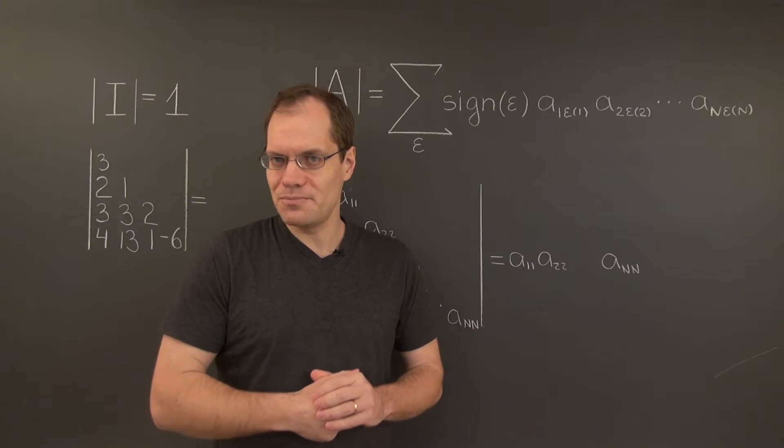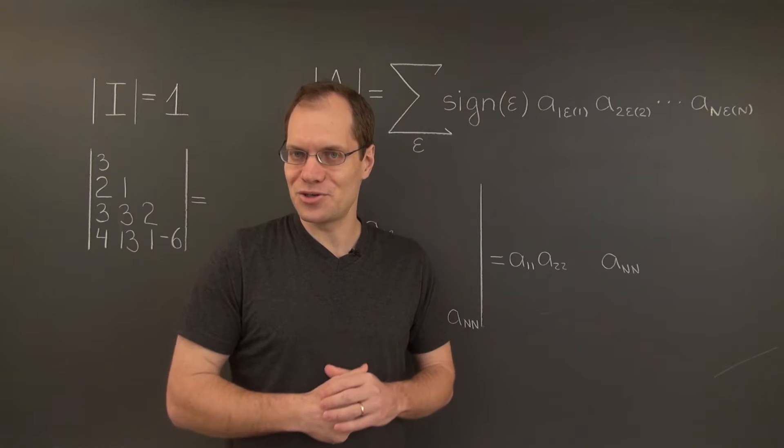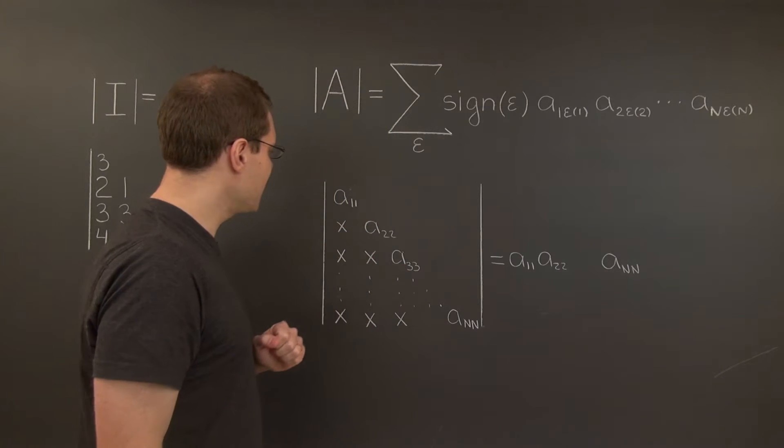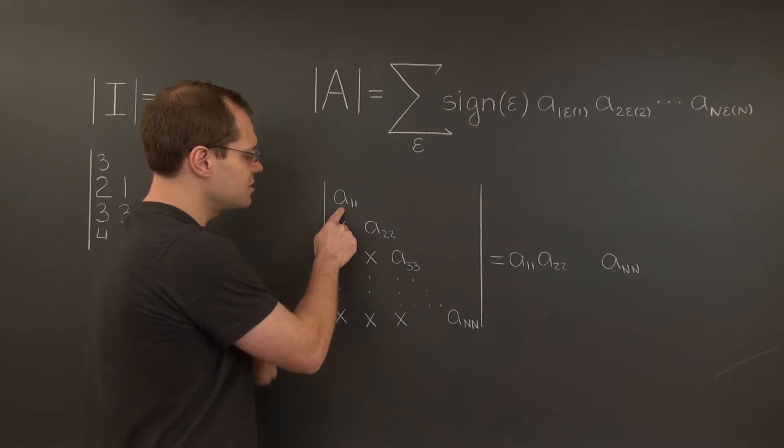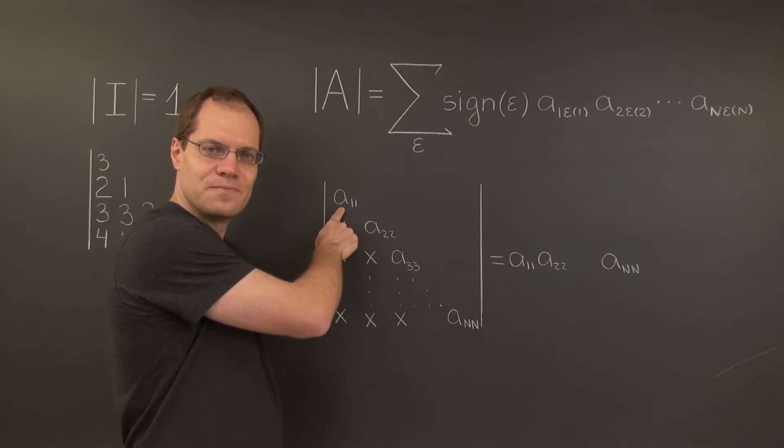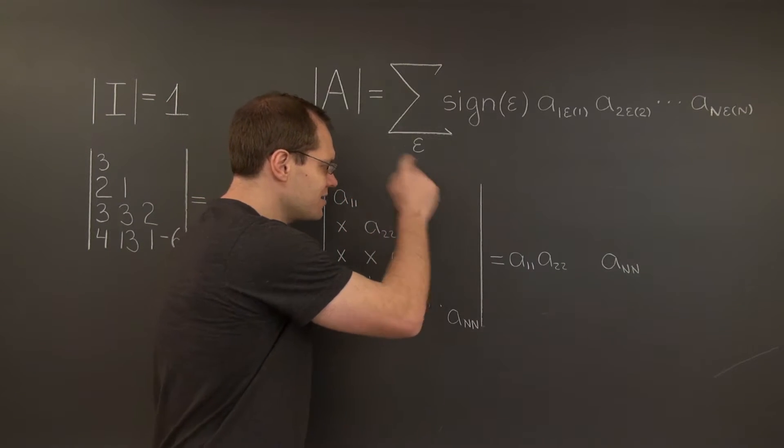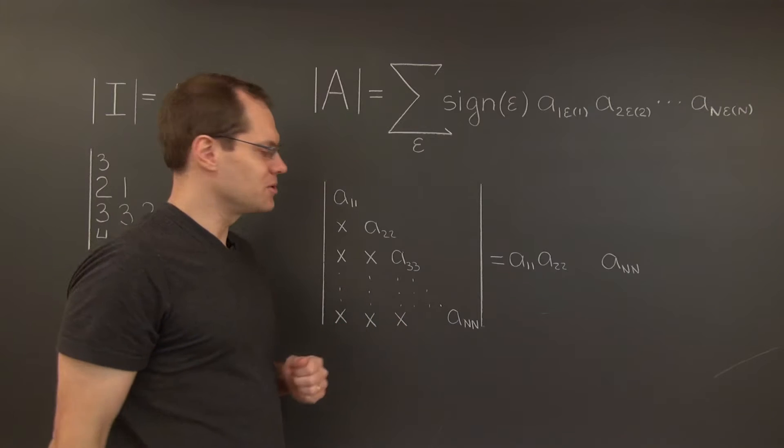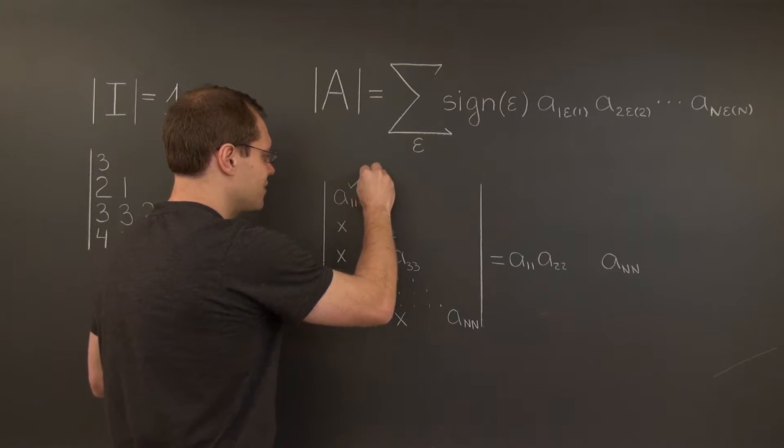Well, all of the non-zero terms from the matrix, among the n factorial of them, all of the non-zero ones must use a11 from the first row, simply because all the other entries in the row are zero, so they all must have a11.